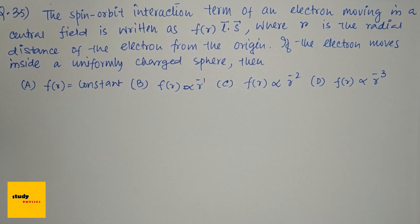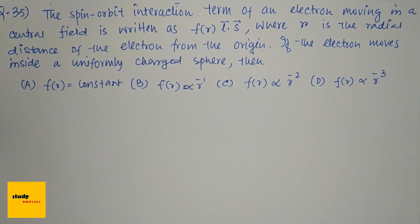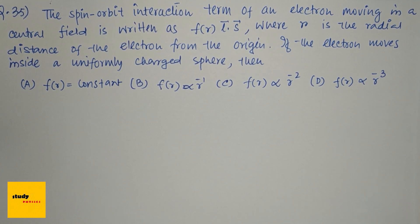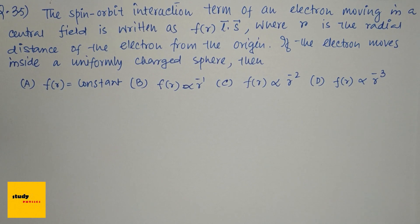The spin-orbit interaction term of an electron moving in a central field is written as f(r)L·S, where r is the radial distance of the electron from the origin. If the electron moves inside a uniformly charged sphere, then we have four options.